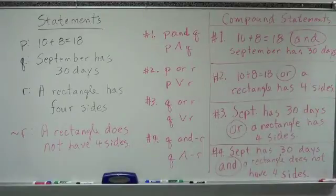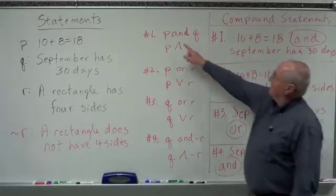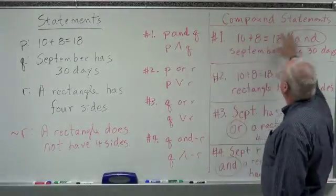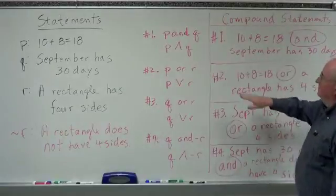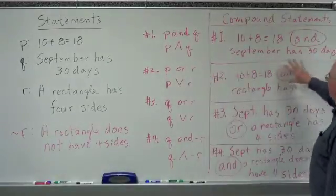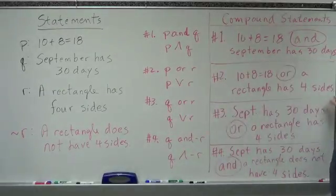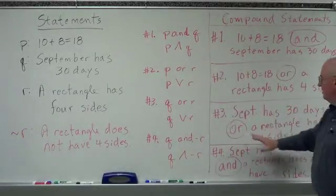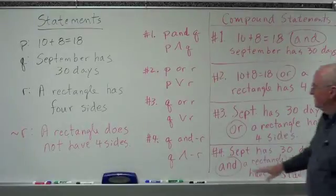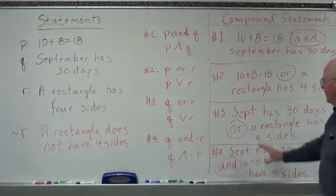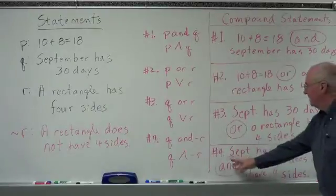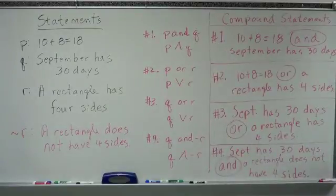September has 30 days, and a rectangle does not have four sides. So we've made our statements. P and Q: write down P, put an 'and', write down Q. P or R: write down P, put an 'or', write down R. Q and not R: write down Q, and write down not R. That's how you make compound statements — pretty simple.